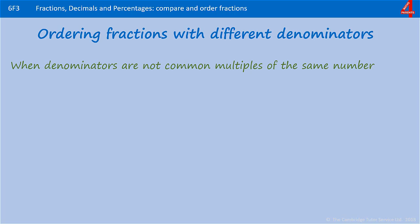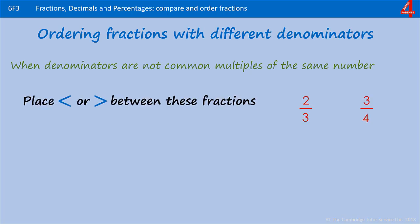This is one for you to try. Place the smaller than or bigger than symbol between two-thirds and three-quarters. Even if you know just by looking at this which is smaller, go through the process of making the denominator the same, because it's useful to know when you get numbers that aren't quite as obvious. Pause the video and have a go.